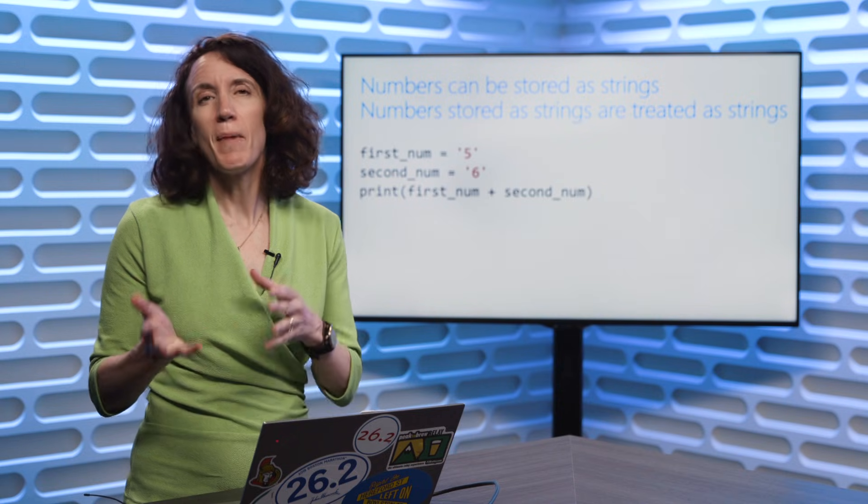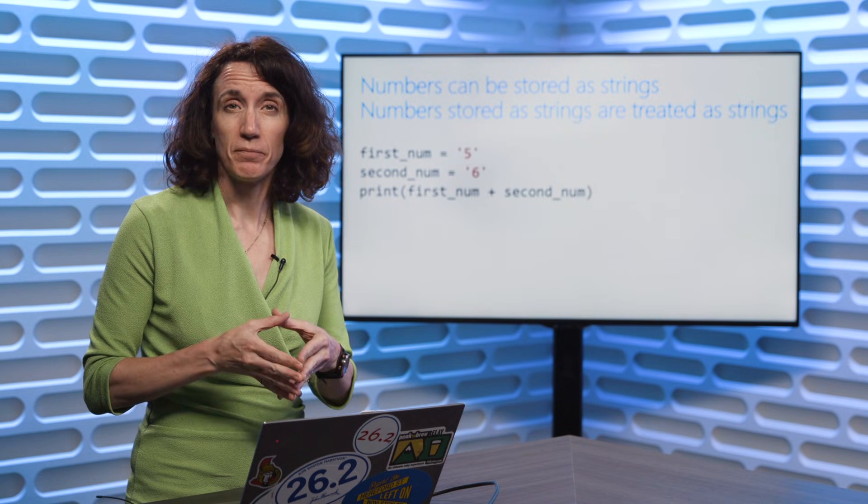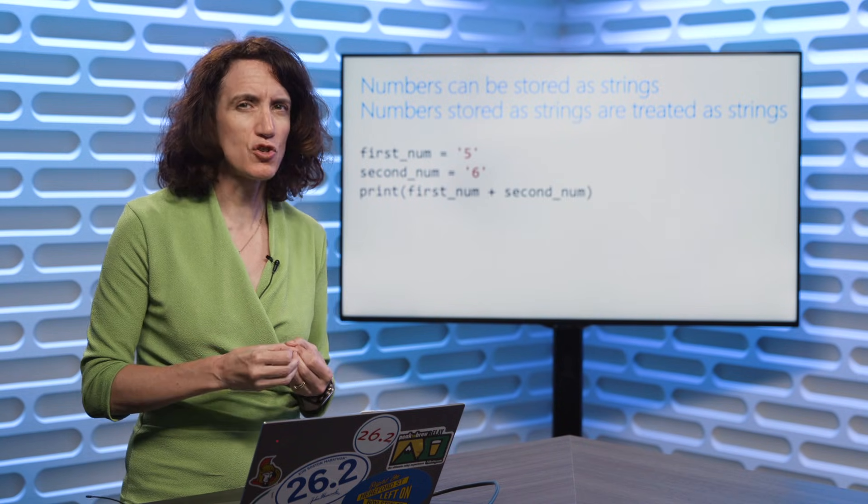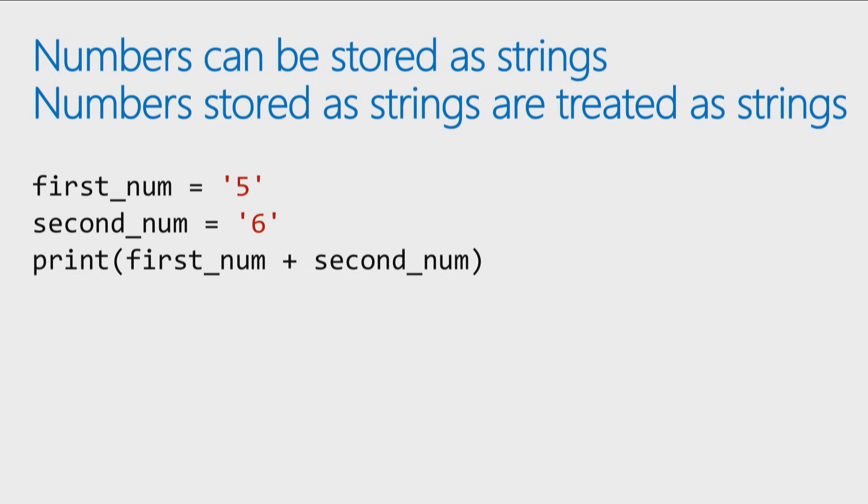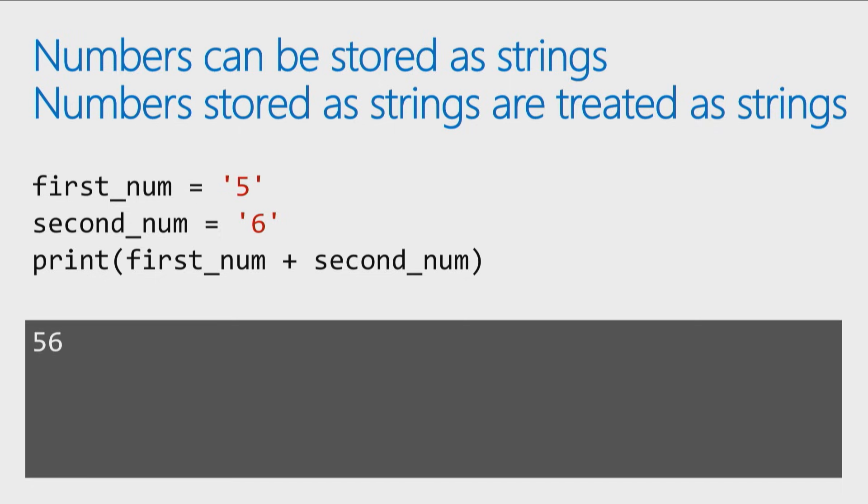Now, when I do this, I'm actually storing a number as a string. As soon as you store a number as a string, that also creates some interesting effects. So if I take a first number and I store the number five in it, if I put quotes around that number five, it now treats it as a string that contains the number five, and second number is equal to six, a string that contains number six. Well, what happens when you concatenate two strings together with a plus sign? It puts the two strings together, so I get 56.